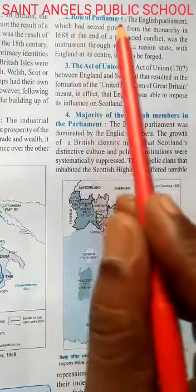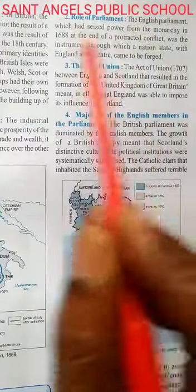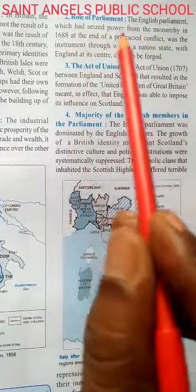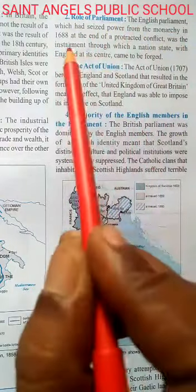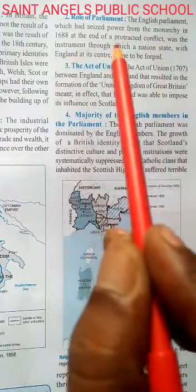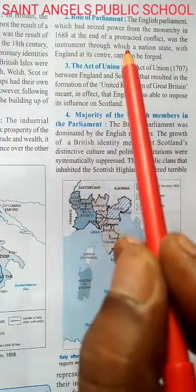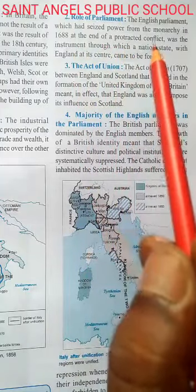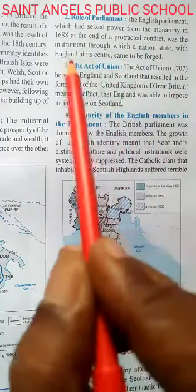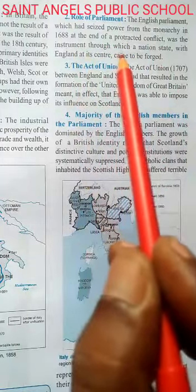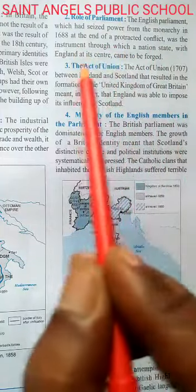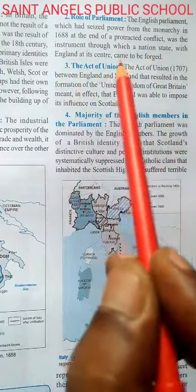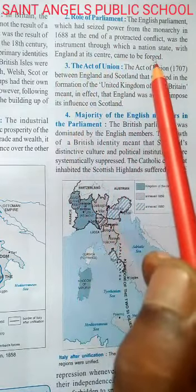The role of parliament. The English parliament, which had seized power from the monarchy in 1688 at the end of a protracted conflict, was the instrument through which a nation state with England at its center came to be forged.